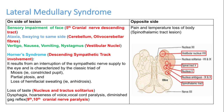The vestibular nuclei are involved, so the patient can have vertigo, nausea, vomiting, and nystagmus. The descending sympathetic tract is also involved, leading to Horner's syndrome — with classical features of constricted pupil, partial ptosis, and loss of hemifacial sweating.